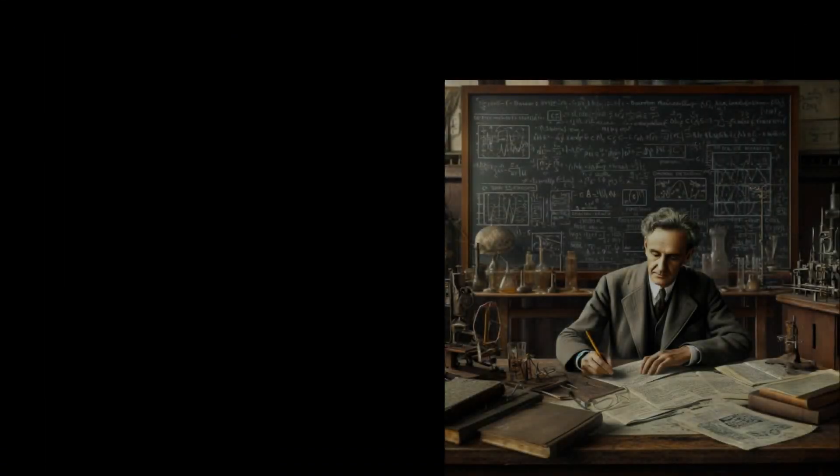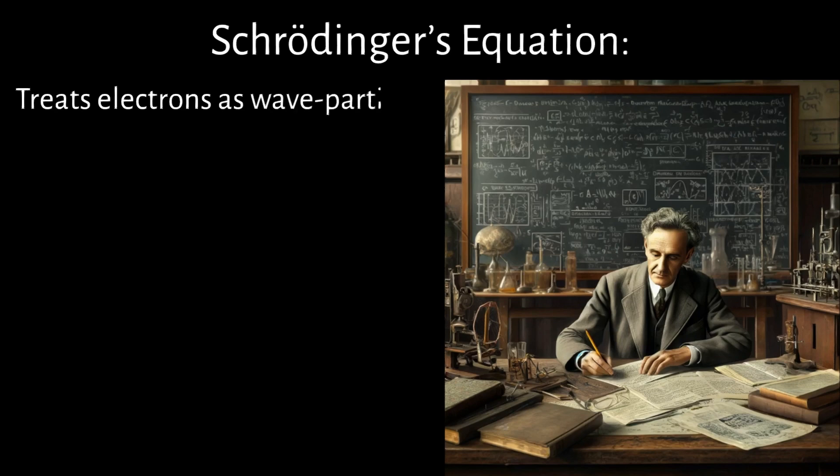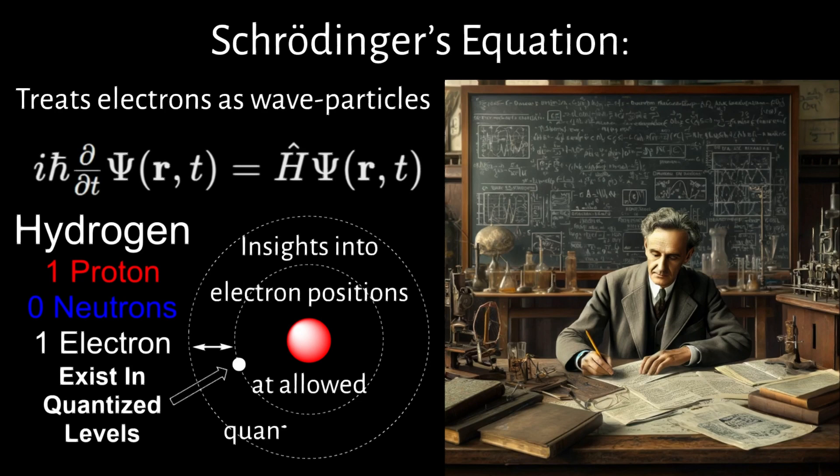The probability of finding an electron's location was further transformed with Erwin Schrödinger's wave equation, later known as Schrödinger's equation, which treats electrons as entities possessing both wave-like and particle-like characteristics and laid the groundwork for quantum mechanics. While Schrödinger's equation is mathematically complex, its application to the hydrogen atom revealed profound insights into electron positions at allowed quantum levels.